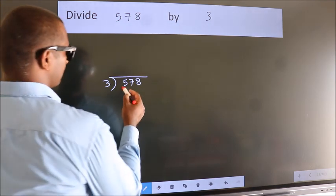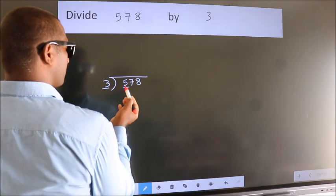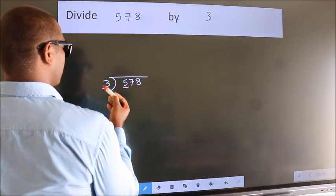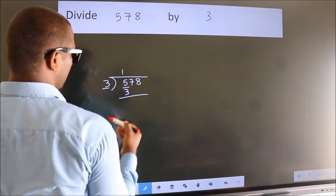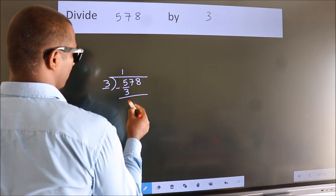Here we have 5, here 3. A number close to 5 in the 3 table is 3 once 3. Now, we should subtract. We get 2.